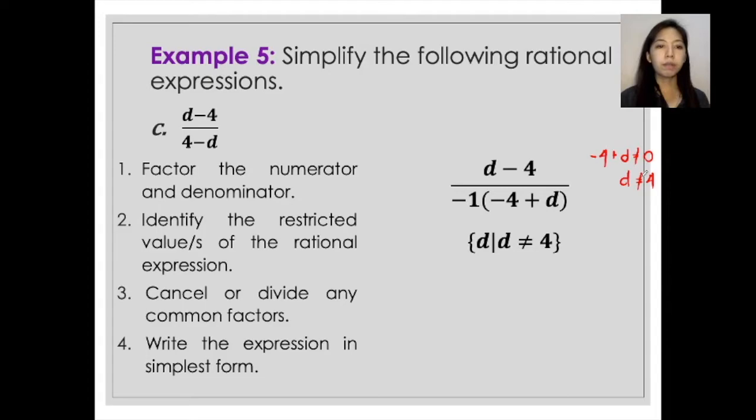Now, for the cancellation or division of any common factors, this is what will happen. The negative 4 plus d in the parenthesis on step 1 can be rewritten as d minus 4. The sign for each term remains the same. 4 is still negative and d is still positive.